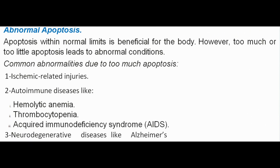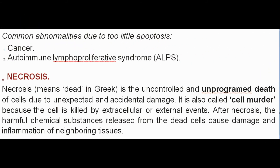Apoptosis within normal limits is beneficial for the body. However, too much or too little apoptosis leads to abnormal conditions. Common abnormalities due to too much apoptosis include ischemic-related injuries, autoimmune diseases like hemolytic anemia, thrombocytopenia, AIDS, and neurodegenerative diseases like Alzheimer's disease. Common abnormalities due to too little apoptosis include autoimmune lymphoproliferative syndrome (ALPS).